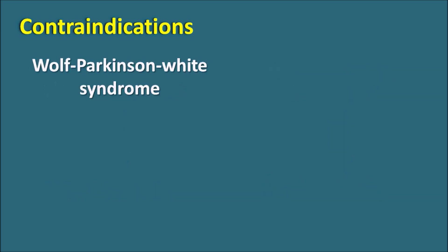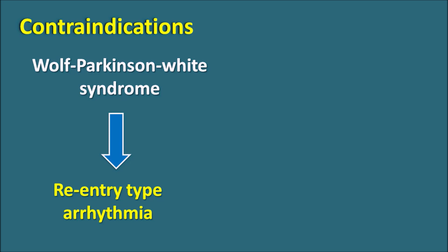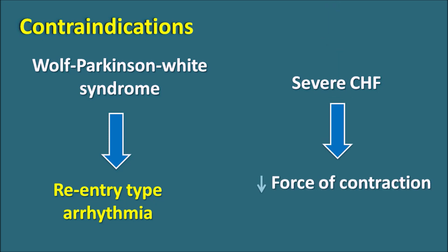Next is Wolf-Parkinson-White syndrome, which is a re-entry type of arrhythmia. In re-entry arrhythmias, drugs that increase action potential duration should be used. Verapamil blocks calcium channels, reducing action potential duration, which may worsen re-entry arrhythmias and increase Wolf-Parkinson-White syndrome. That's why verapamil is strictly contraindicated in re-entry type arrhythmias like Wolf-Parkinson-White syndrome. Another contraindication is severe congestive heart failure: verapamil produces a negative inotropic effect, decreasing force of contraction and cardiac output, making it contraindicated in severe heart failure.